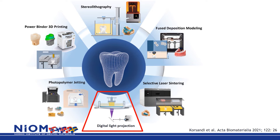DLP is a similar process, also a photo-induced polymerization of liquid resin in a tank. However, in DLP there is a projection of light using micro mirrors onto the full print layer in each light flash. This gives a more rapid layer-by-layer printing.